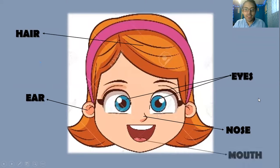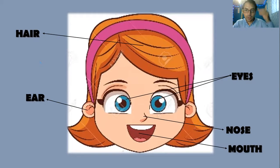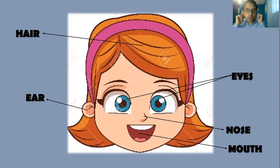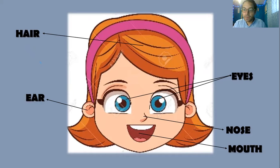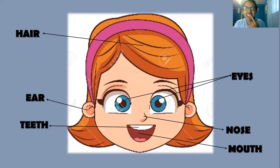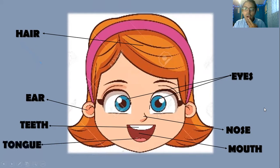Luego tenemos la boca. Mouth. Entonces tenemos hair, el cabello. Eyes, los ojos. Ear, la oreja, o ears, las orejas. Nose, la nariz. Mouth, la boca. Y en la boca we have got the teeth, los dientes. Y en la boca we have got the tongue. La lengua.